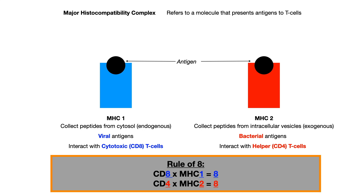The thing you need to know is the rule of eight. This is a really handy way to memorize the interactions between the MHCs and CD4 versus CD8 cells. The rule says that if you multiply the number from the CD times the number from the MHC, it'll always equal eight. So CD8 cells interact with MHC1 because one times eight equals eight, and CD4 cells interact with MHC2 because four times two equals eight.